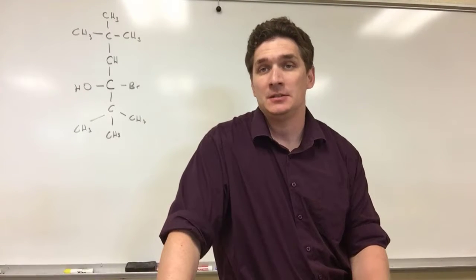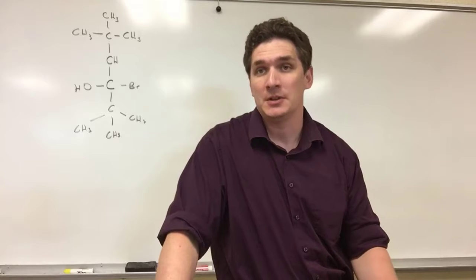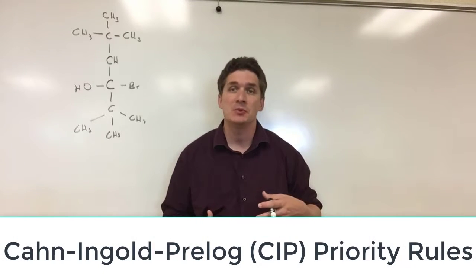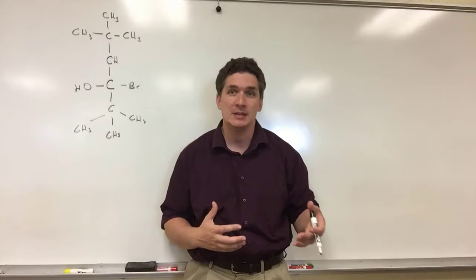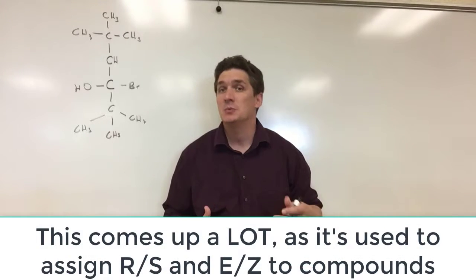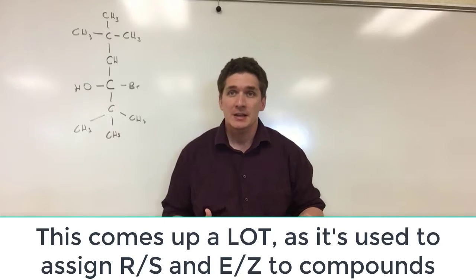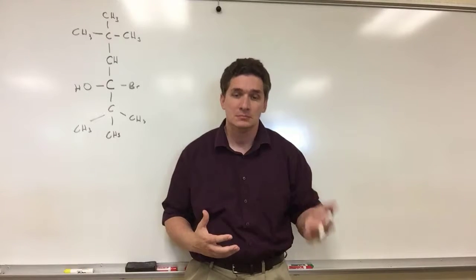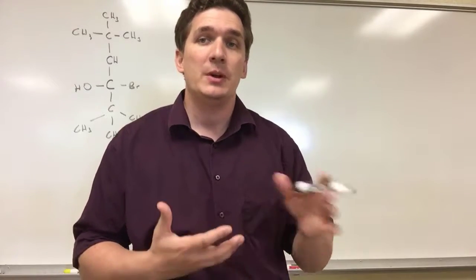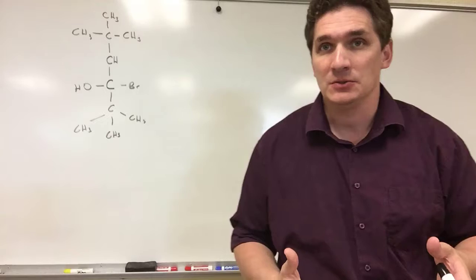All right, so let's talk about the Cahn-Ingold-Prelog rules that are used to assign priorities when we're looking at both the E/Z notation for alkenes, as well as the R/S notation when we start looking at chiral centers. The Cahn-Ingold-Prelog rules are basically a way of prioritizing which way we want to align the functional groups.